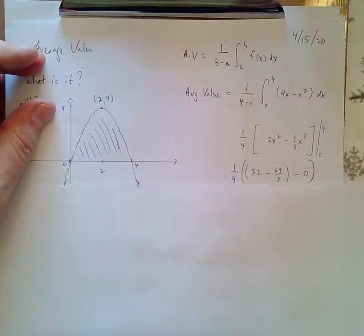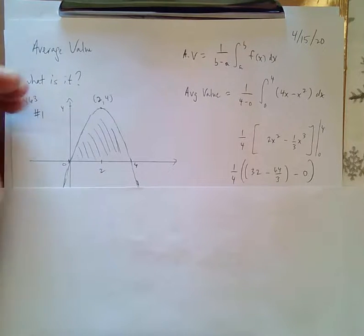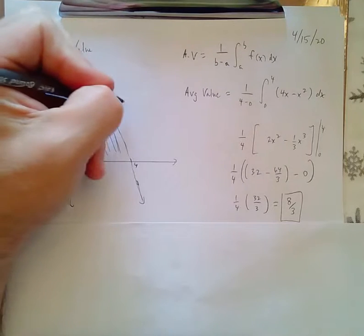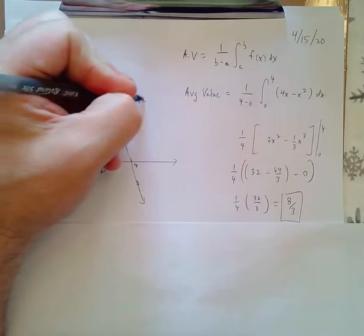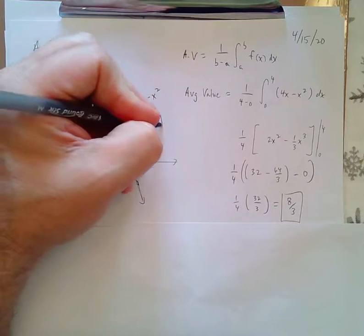So let's just say the first assignment, page 463, number 1. The graph of y equals 4x minus x squared in the interval 0 to 4.